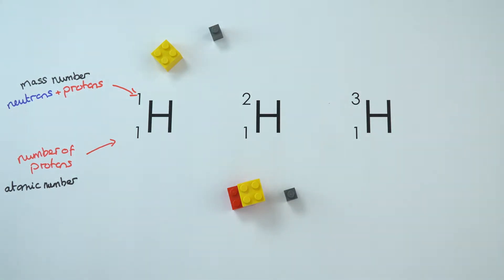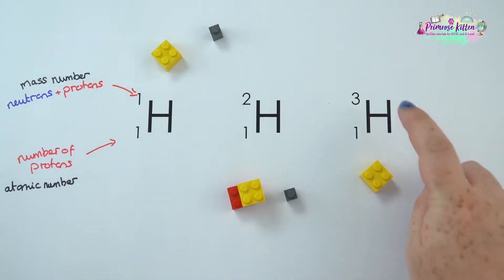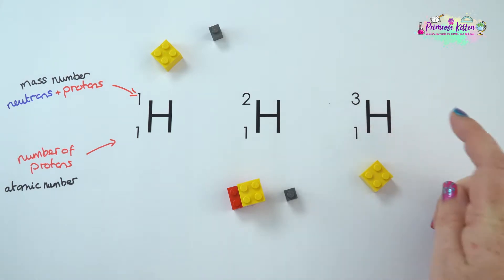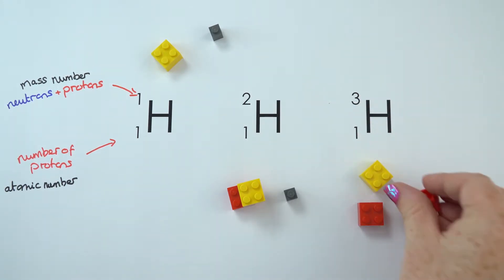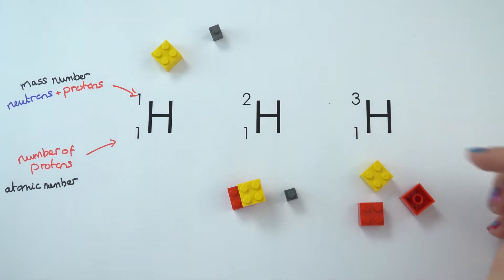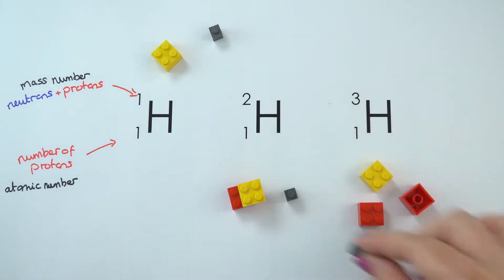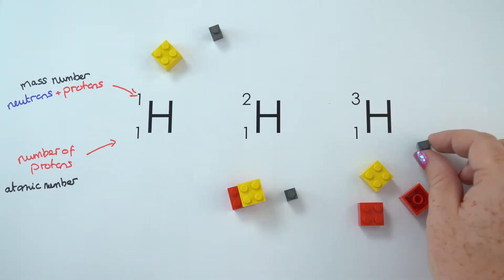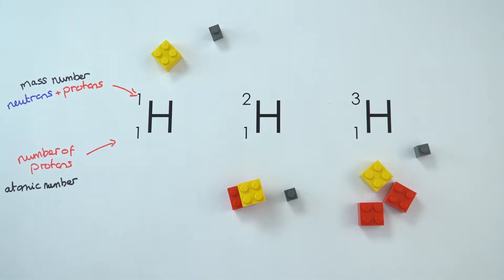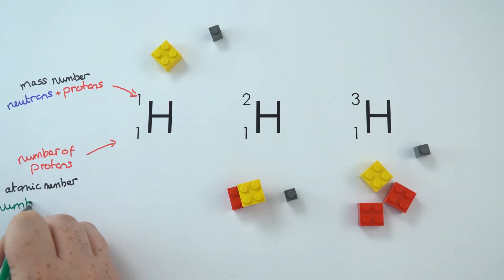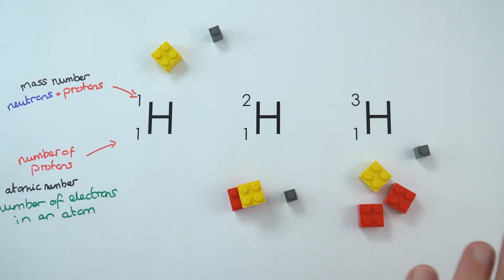And then finally, the third one again has one proton — that's our yellow block. Our mass number up here is three, so three minus one gives us two neutrons. Our number of protons is also equal to our number of electrons, so this again has just one electron swinging around the outside. These are known as isotopes — they're the same element, with the same number of protons but a different number of neutrons.